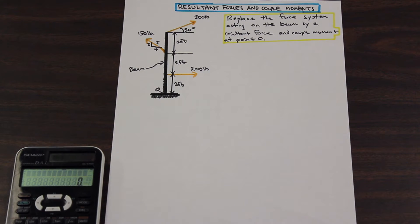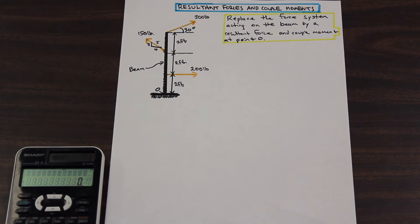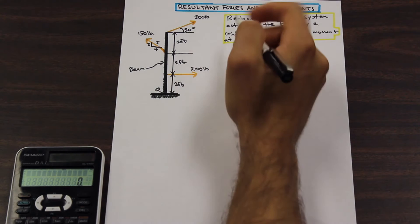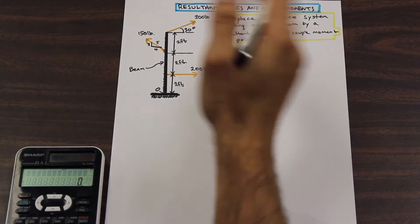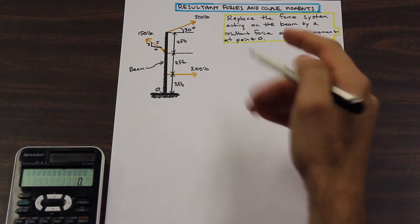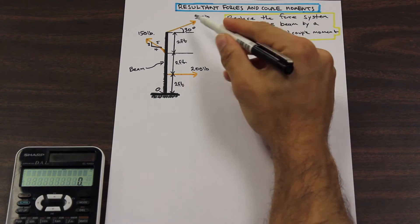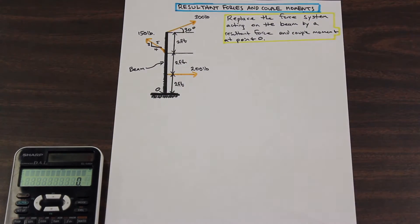This is what you are going to see in Statics 1 — it's going to be the first part of the course and it's going to translate directly into Statics 2 when we start dealing with columns and that kind of stuff. So what we are going to do first is resolve all of these forces into a single resultant force. That's the first part of solving any problem like this. Let's resolve each force in terms of its x and y components.